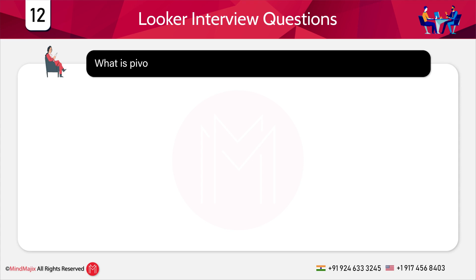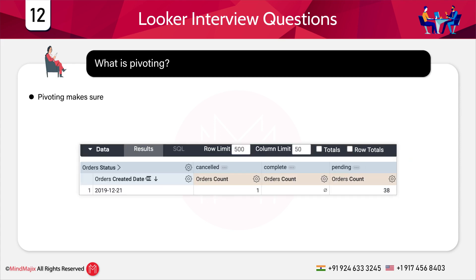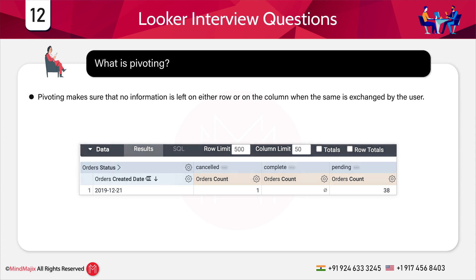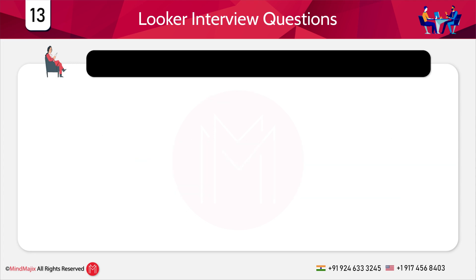The next important question is: what do you mean by the term pivoting? Data can be easily switched from row to column and vice versa. The switching categories related to this are considered as pivoting. Pivoting makes sure that no information is lost on either row or column when the data is exchanged by the user.